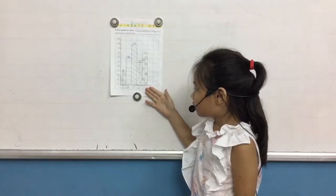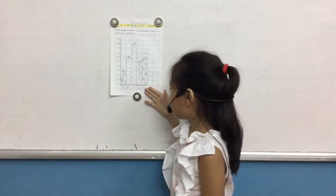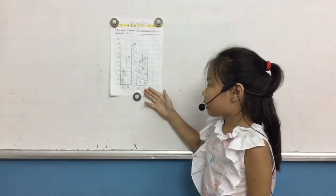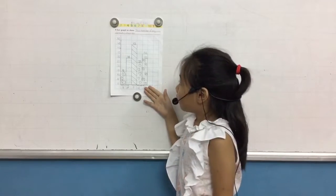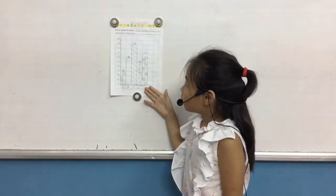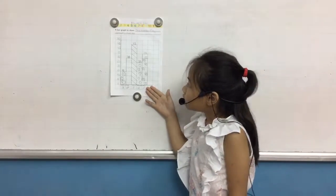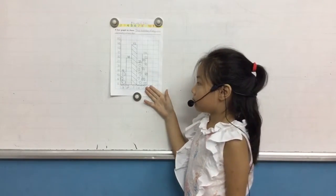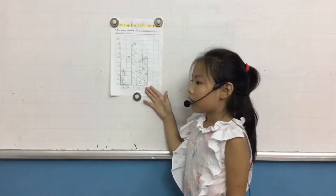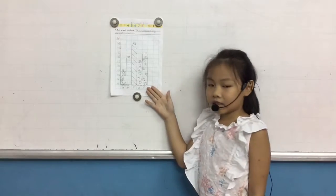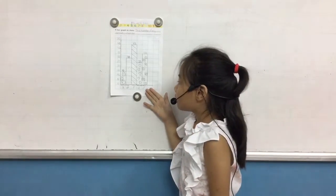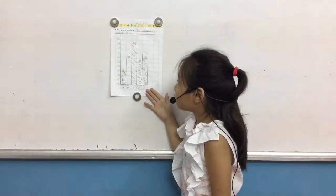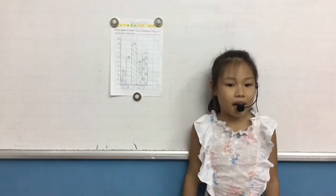The difference between school bags and erasers is 45 minus 15 equals 30. Thank you for listening. Goodbye.